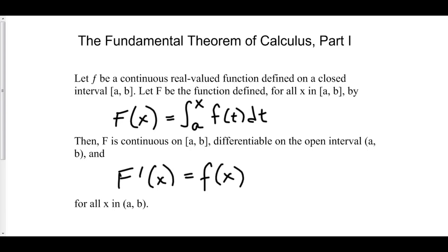Let little f be a continuous real-valued function defined on a closed interval from a to b. Furthermore, let big F be the function defined for all x by big F equals the integral from a to x of little f of t dt. Then, big F is continuous on [a, b], it's differentiable on (a, b), and furthermore, the derivative of big F is little f.